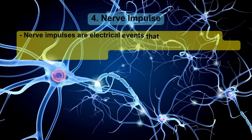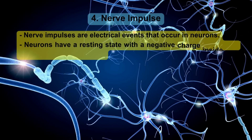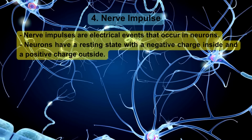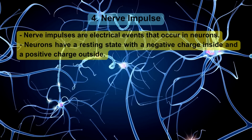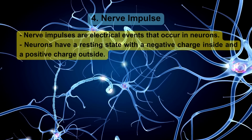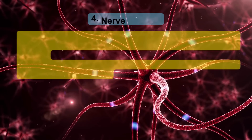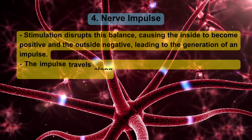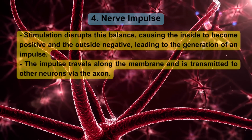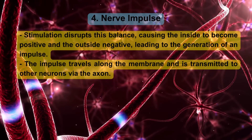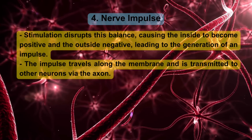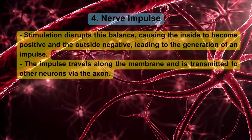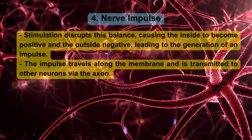Nerve impulses are electrical events that occur in neurons. Neurons have a resting state with a negative charge inside and a positive charge outside. Stimulation disrupts this balance, causing the inside to become positive and the outside negative, leading to the generation of an impulse. The impulse travels along the membrane and is transmitted to other neurons via the axon.